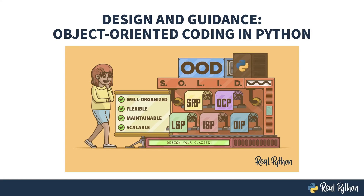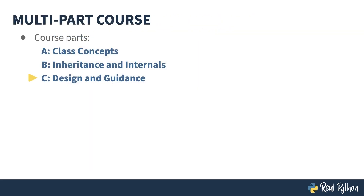Welcome to Object-Oriented Coding in Python: Design and Guidance. My name is Christopher, and I will be your guide. This is the third part of a multi-part course. Parts 1 and 2 are about the how of object-oriented coding, covering the syntax of classes in Python and how to use its attributes and methods.